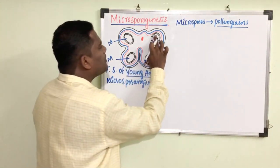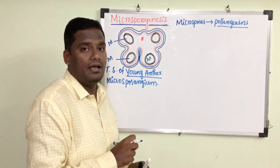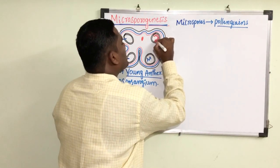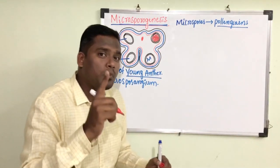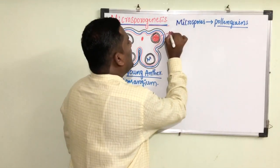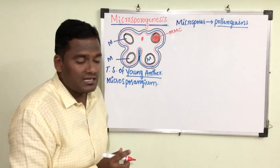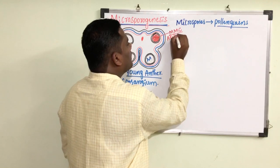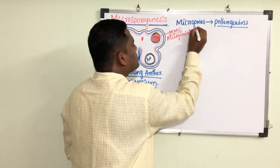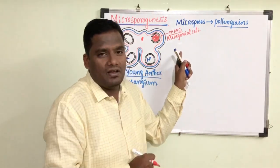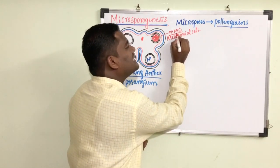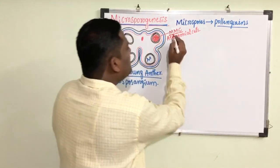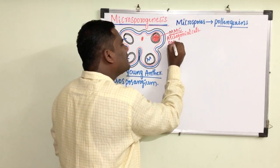Inside these microsporangia, microspore mother cells (MMC) are present. These cells are collectively called sporogenous tissue. These microspore mother cells are also called archesporial cells. The name itself gives the meaning: it is a mother cell that in future gives rise to microspores, which are pollen grains. Hence these microspore mother cells are also called pollen mother cells (PMC).